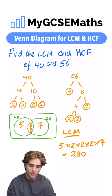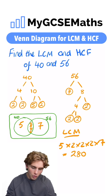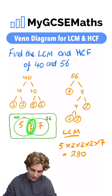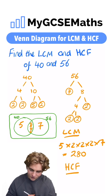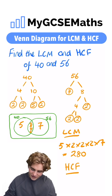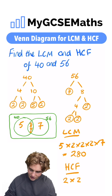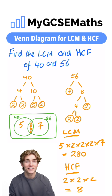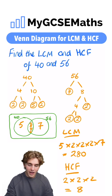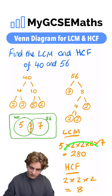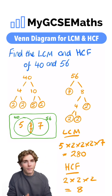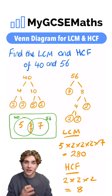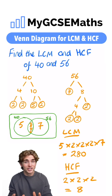What about our highest common factor? In order to find that, we're going to multiply only the numbers which are in the middle of the Venn Diagram. So our highest common factor for 40 and 56 is equal to two times two times two, which is eight — our answer. You could do this by writing out the multiples and factors of these numbers, but the Venn Diagram method is useful because you can apply it in any situation.